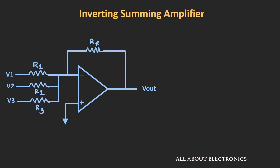Let's assume that currents I1, I2, and I3 are flowing through resistors R1, R2, and R3, and the current IF is flowing through the feedback resistor RF. We are assuming the op-amp is ideal, so no current flows into the op-amp itself. Let's call the inverting input node X.